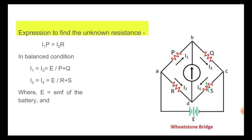In balanced condition, there is no current flows through the galvanometer. The current flows through the resistance P and the resistance Q is same. It means I1 value is equal to the I3 value, that value is equal to E by P plus Q.